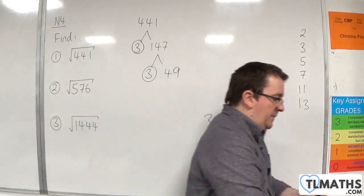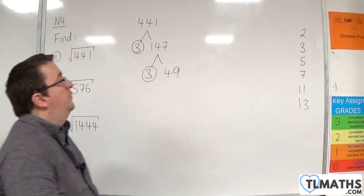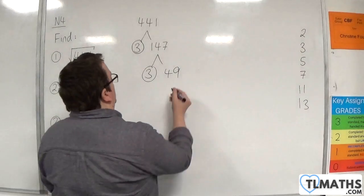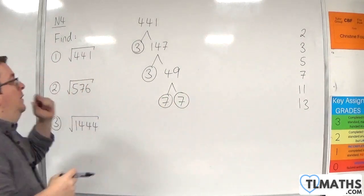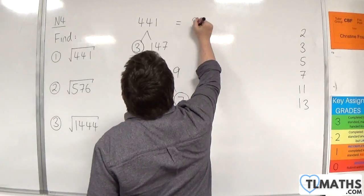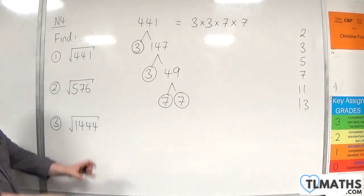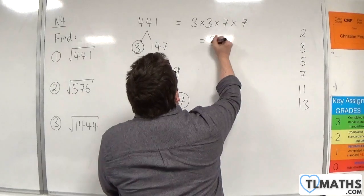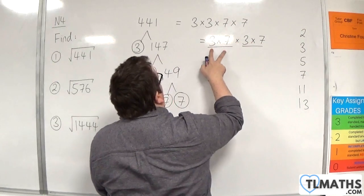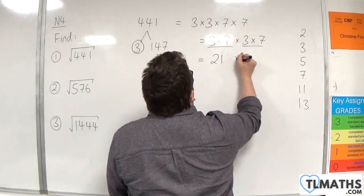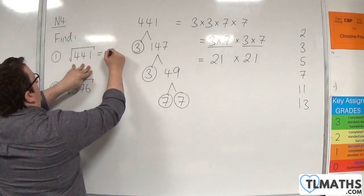Now 49 is not prime, but it's not divisible by 2, 3, or 5. But it is divisible by 7 because 49 is 7 squared — 7 times 7. So 441 is 3 times 3 times 7 times 7. If we share that out, we can write that as 3 times 7 times 3 times 7 — so each pair gets a 3 and a 7. That is 21 times 21, so the square root of 441 is 21.